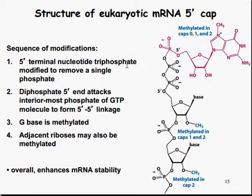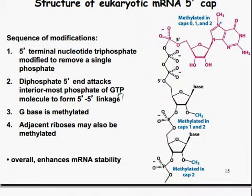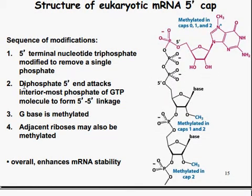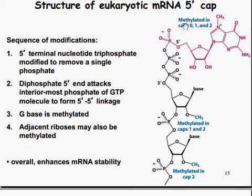The structure of the eukaryotic mRNA 5' cap: the sequence of modifications begins with a 5' trinucleotide triphosphate, which is modified to remove a single phosphate. Then the diphosphate 5' end attacks the innermost phosphate of a GTP molecule to form a 5'-to-5' linkage. The G base is methylated, and the adjacent riboses may also be methylated — you can see the 5' cap methylated in 0, 1, or 2 locations. The biggest function this performs is enhancing mRNA stability.